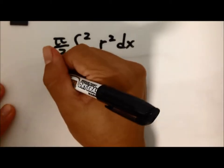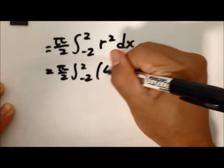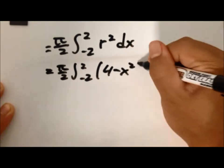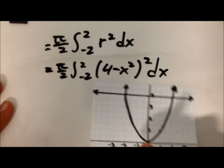Now we just plug in r, which was 4 minus x squared. And what you can do is, because this is an even function,